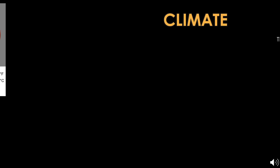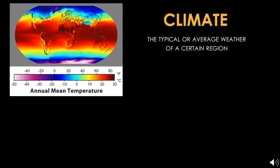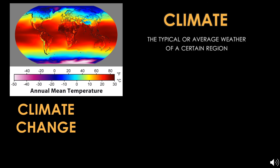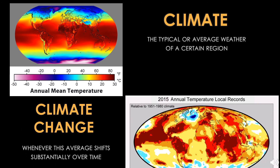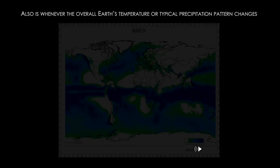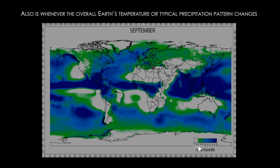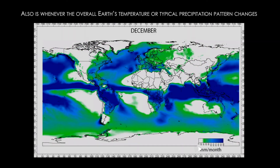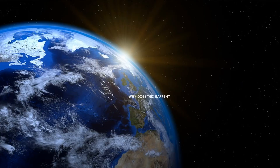Climate is the typical or average weather of a certain region, and climate change is whenever this average weather shifts substantially over time. Also, it is whenever the overall Earth's temperature or typical precipitation pattern changes.